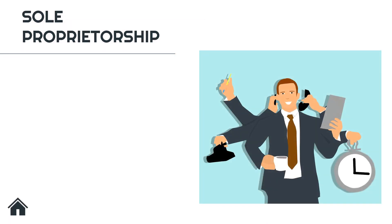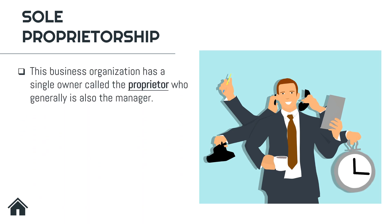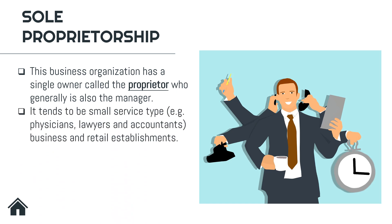First, we have sole proprietorship. This business organization has a single owner called the proprietor, who generally is also the manager. So it means in sole proprietorship, only one person manages the organization or the business. It tends to be small service-type businesses and retail establishments — for the service type, we have physicians, lawyers, and accountants.